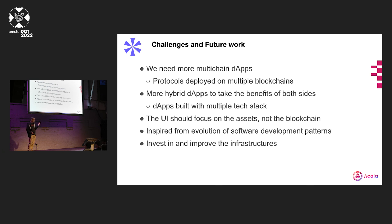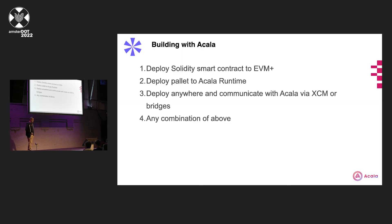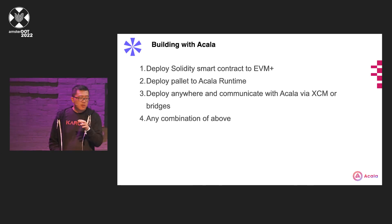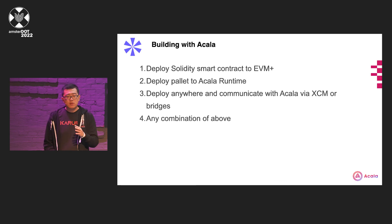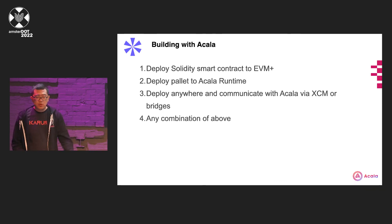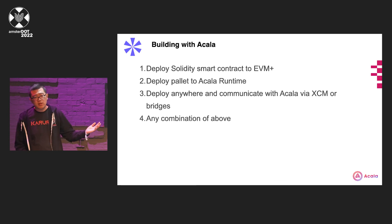We still need to do a lot of investment and improve the infrastructure side. That's another reason we have all these bounties, and the Polkadot Treasury is also helping a lot in this area. There are a lot of ways to build with Acala. We're going to launch our EVM Plus very soon, and you can deploy your Solidity smart contract projects there, deploy your pallets, or deploy elsewhere. Because we are connected to blockchains, you can still be part of the Acala ecosystem without actually being deployed on Acala. You can find an edge by doing something interesting that was simply not possible before.